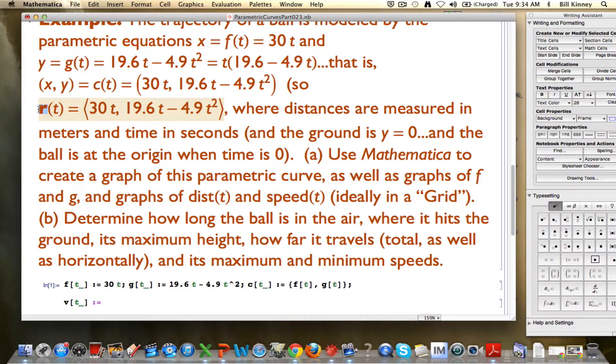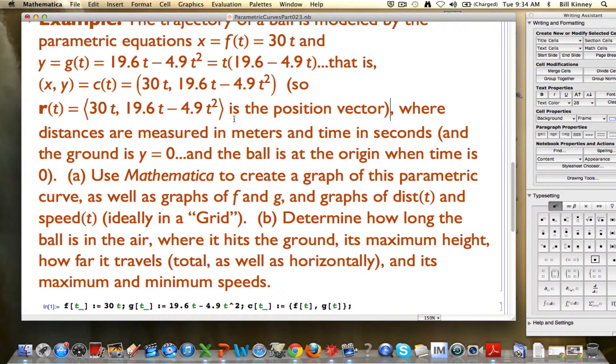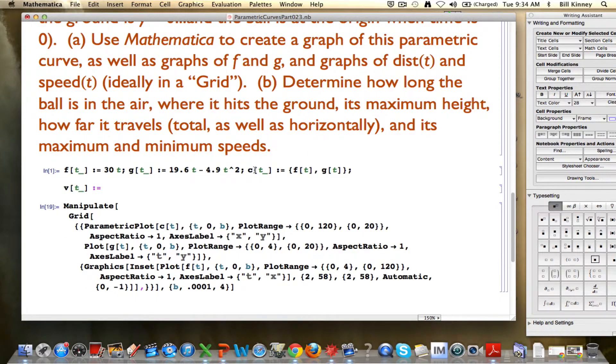This is the position vector. And I could go ahead and define an r(t) here, but essentially I would use the same formula that I used for c(t). Mathematica treats c(t) and r(t) the same. And I can differentiate c(t) to get the velocity vector here.